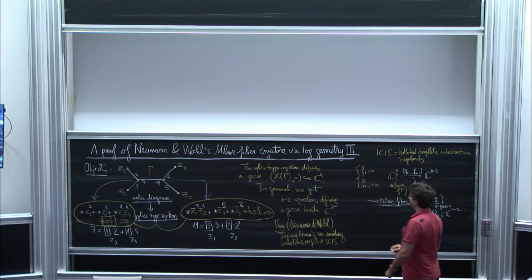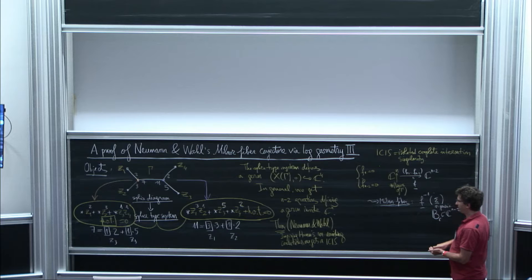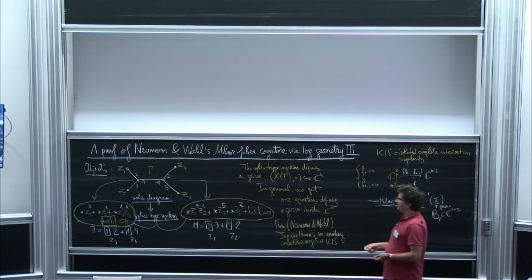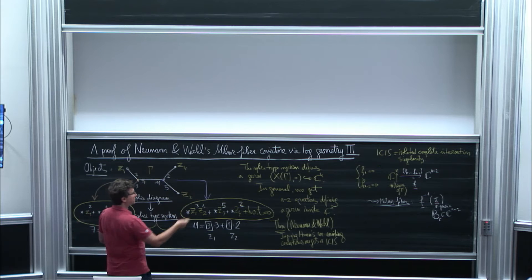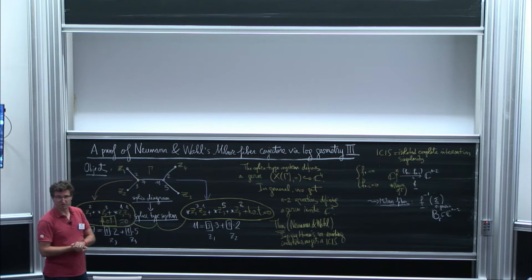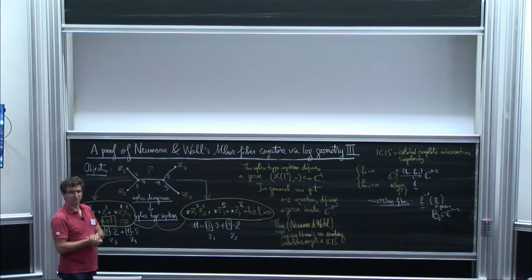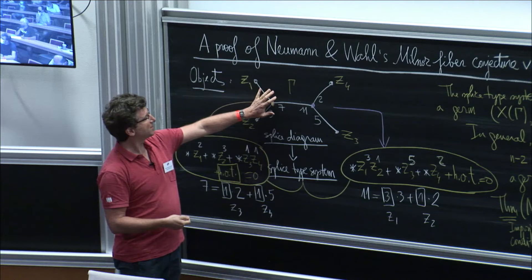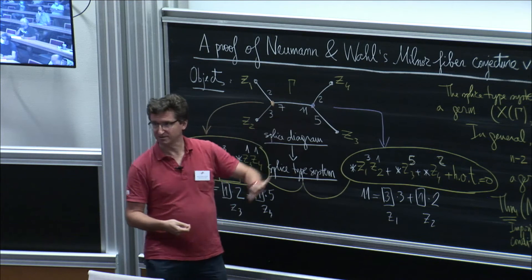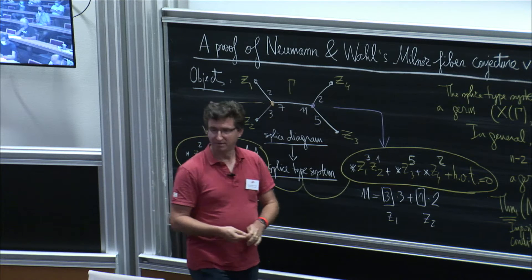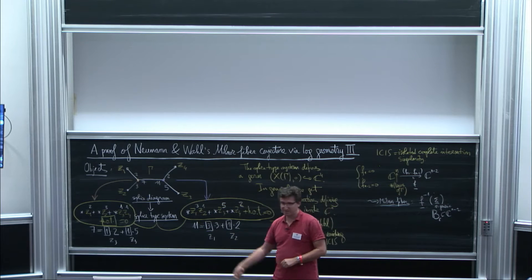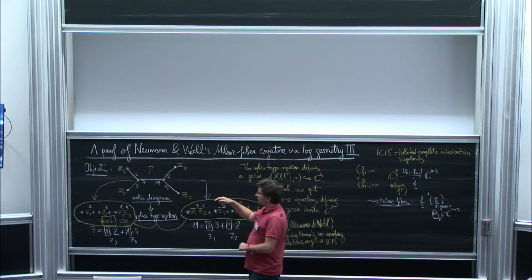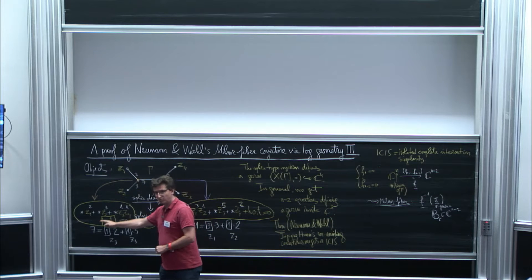Generic here means precisely outside the discriminant of the situation. That's why such singularities have Milner fibers. Their conjecture is about a way to describe this Milner fiber — which is a four-dimensional manifold with boundary — by a four-dimensional splicing operation from the Milner fibers of the two sides. Question: Are these always quasi-homogeneous? No — it's only when they are star-shaped and when you remove the higher-order terms.